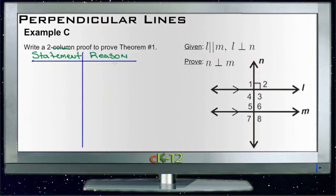Alright, Example C asks us to write a two-column proof to prove Theorem number one. Theorem number one says that if two lines are parallel, say lines L and M, then if one of those lines is perpendicular to a third line, say L is perpendicular to N, then the other line, in this case M, is also perpendicular to the third line. And we need to prove that.